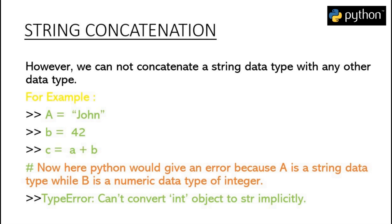For example, if we have a variable A storing the string value 'John' and another variable B storing a numerical value, and we attempt to perform string concatenation, Python will give us an error because Python does not know how to perform an addition operation on an integer and a string type of value.